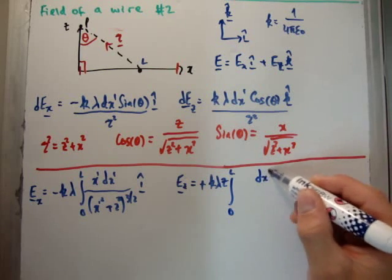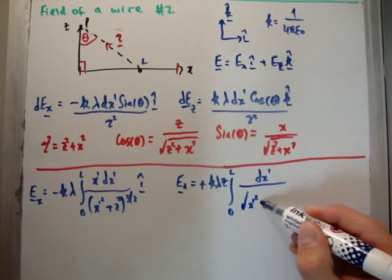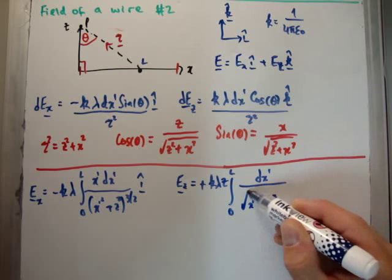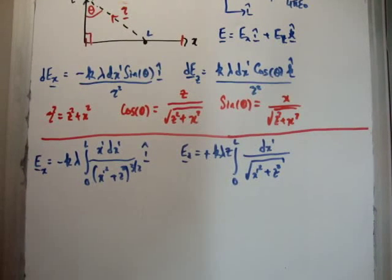With this time dx' divided by the square root of x'² + z². Notice by the way I'm using the primes just to illustrate the fact that we're talking about source charges. It might look kind of trivial here but it is very important definitely when we get later. So the answers to this are as follows.